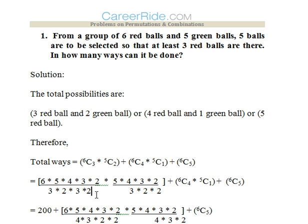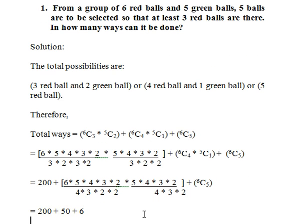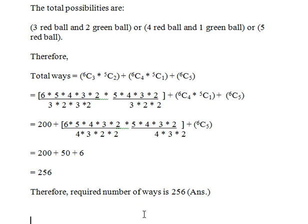We know how to calculate NCR, that is N factorial upon (N minus R) factorial into R factorial. Solving 6C3: 6 factorial divided by (6 minus 3) factorial into 3 factorial, that is 3 into 2. We solve 5C2 similarly. Eventually we get 200 plus 50 plus 6, that is 256. Therefore, the required number of ways is 256.